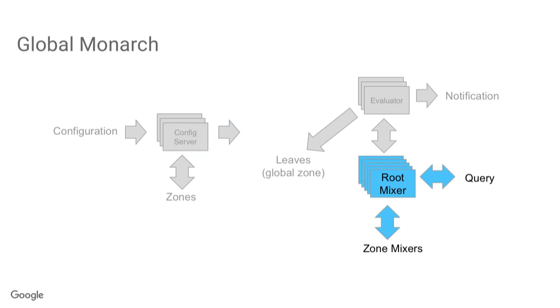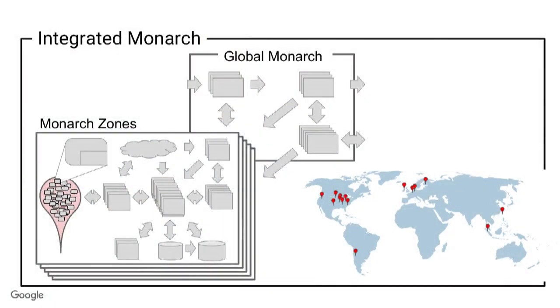For queries, root mixers have the same relation to zones that zone mixers have to leaves. This is where queries come in from users. The root mixer fans out the query to the zones it thinks have the data. Evaluation can also be done at the global level, for example to get a global QPS number. Scaling horizontally is the key point: they collect, retain, and query in a distributed, robust system, and as they get bigger they bring up new zones — more zones and more leaves.